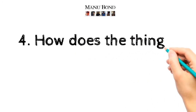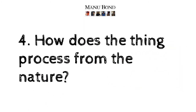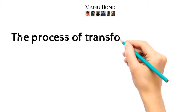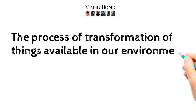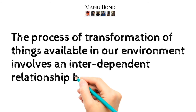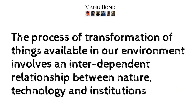Question number 4: How does a thing get processed from nature? Answer: The process of transformation of things available in our environment involves an interdependent relation between nature, technology, and institutions.